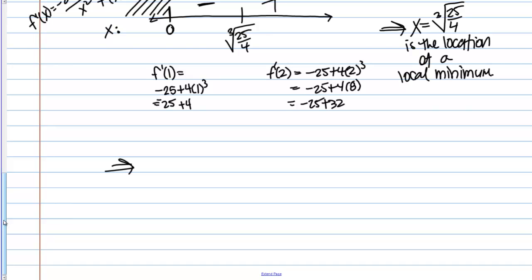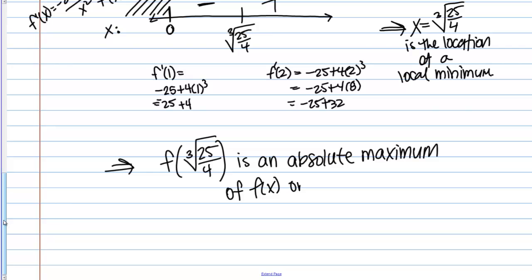So as my final answer, I might write something like this. f(∛(25/4)) is an absolute maximum... oops, that's definitely a typo there. I meant to write absolute minimum, right? It was a local minimum, so it is the absolute minimum.